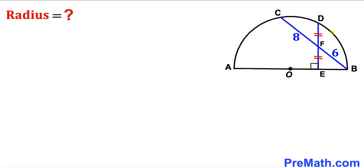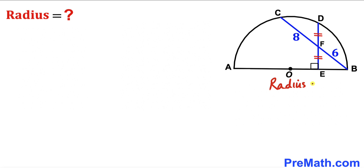Welcome to pre-math. In this video we have a semicircle with center O along with chord BC, and a perpendicular DE that intersects the chord at point F such that segment BF is 6 units, segment CF is 8, and segment DF equals segment EF. Our task is to find the radius of this semicircle.